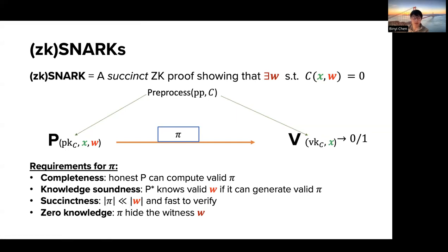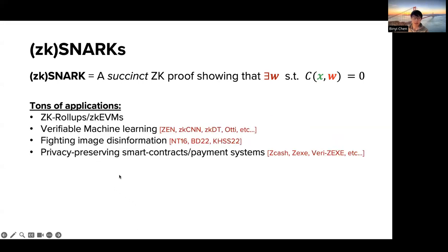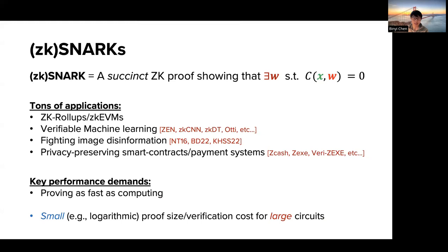Succinctness means the proof size should be much smaller than the original witness and fast to verify. Zero-knowledge means the proof should be hiding information of the original witness. There are tons of applications of zkSNARKs in blockchain, machine learning, privacy-preserving payment systems, and more. The dream goal for zkSNARKs is to make proving as fast as computing — generating a proof as fast as executing a program — while preserving small proof size and verification cost even for large statements.